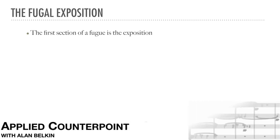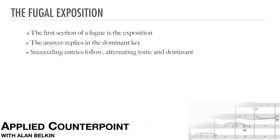The first section of a fugue is the exposition, where each voice enters in turn with the subject. The second entry, called the answer, replies in the dominant key. Succeeding entries follow, alternating tonic and dominant. With many subjects, this alternation of subject and answer in the exposition is smooth and causes no difficulties.